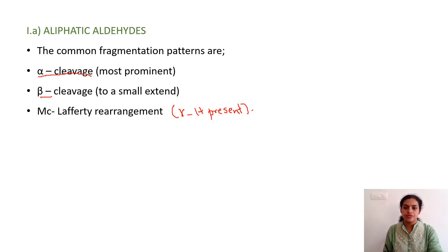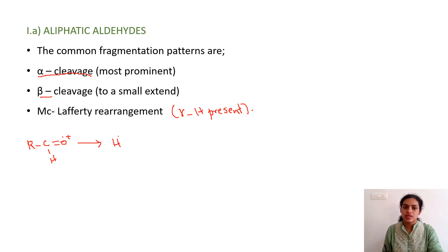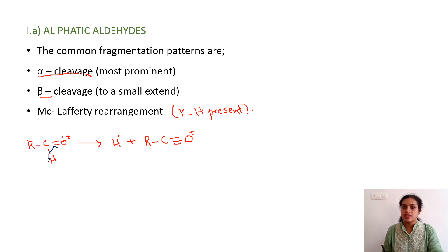Now let us see the alpha cleavage of aliphatic aldehydes. Taking the example of R-CHO, the dot and plus are given on the carbonyl oxygen atom. Here, if H dot is expelled, the resultant species would be R-C≡O⁺. The bond breaks here as a dot, H dot is expelled, and a triple bond is formed between the carbon atom and oxygen atom, giving a species like this.